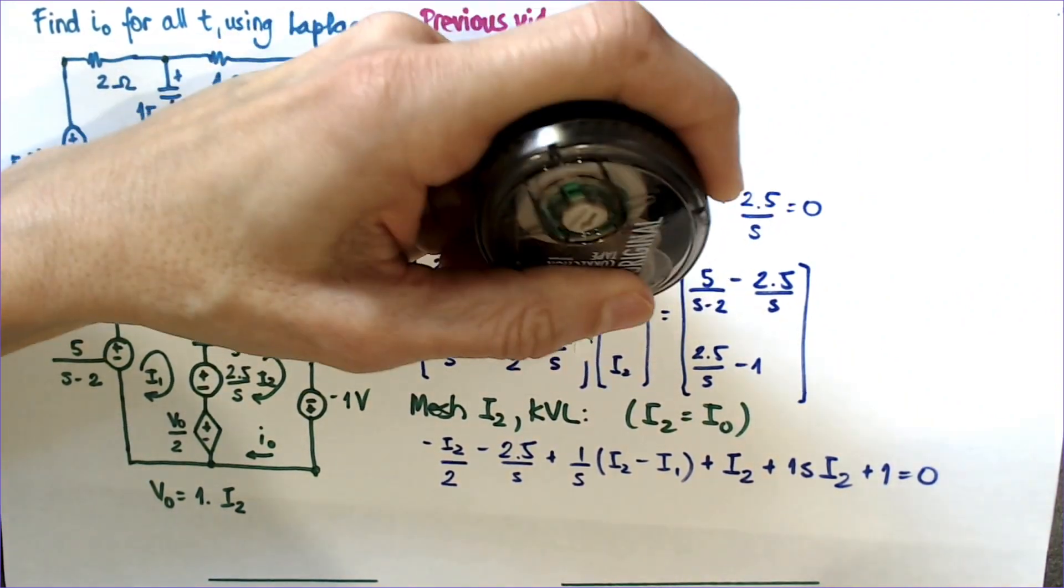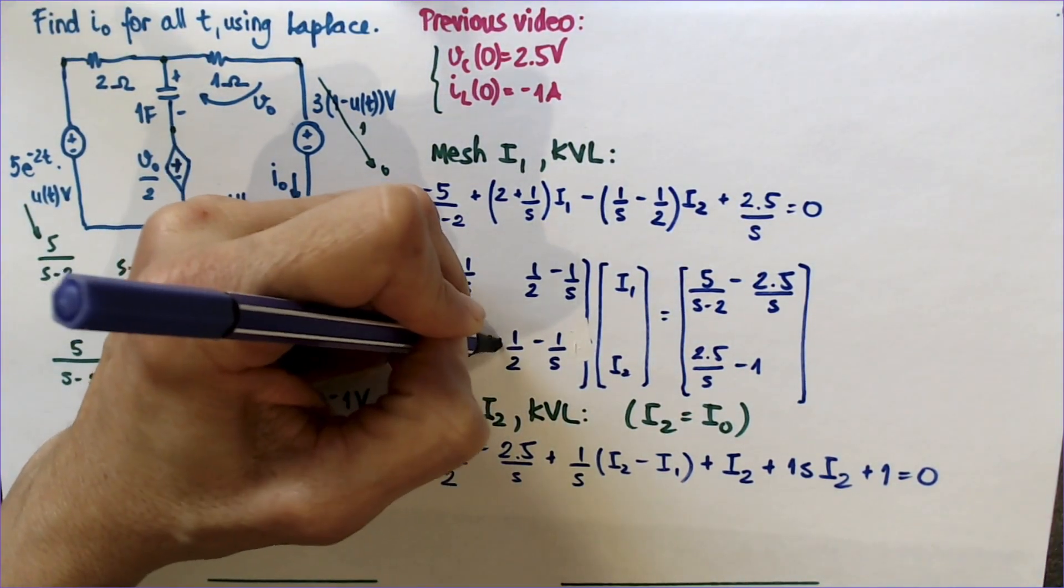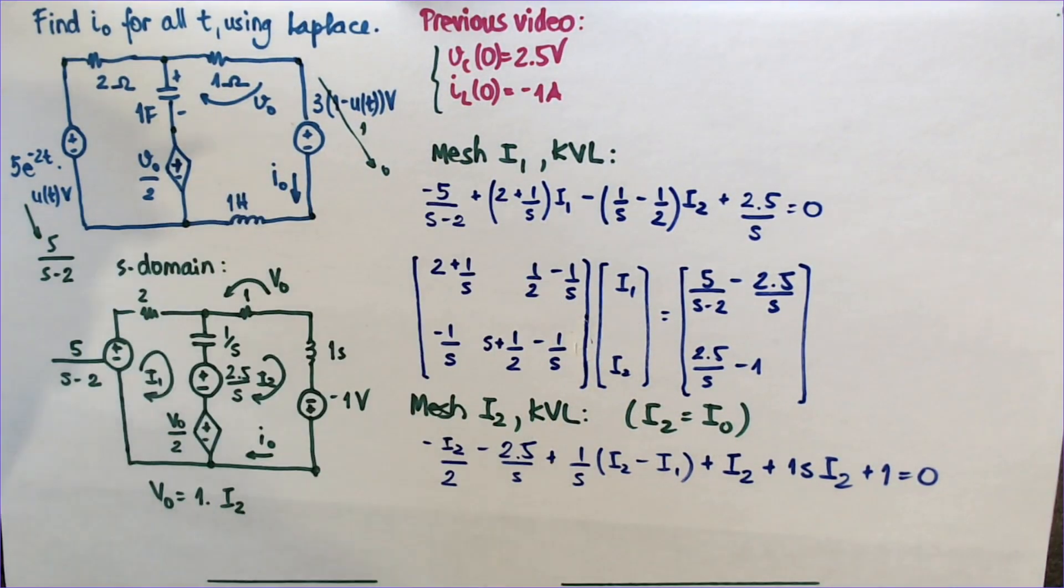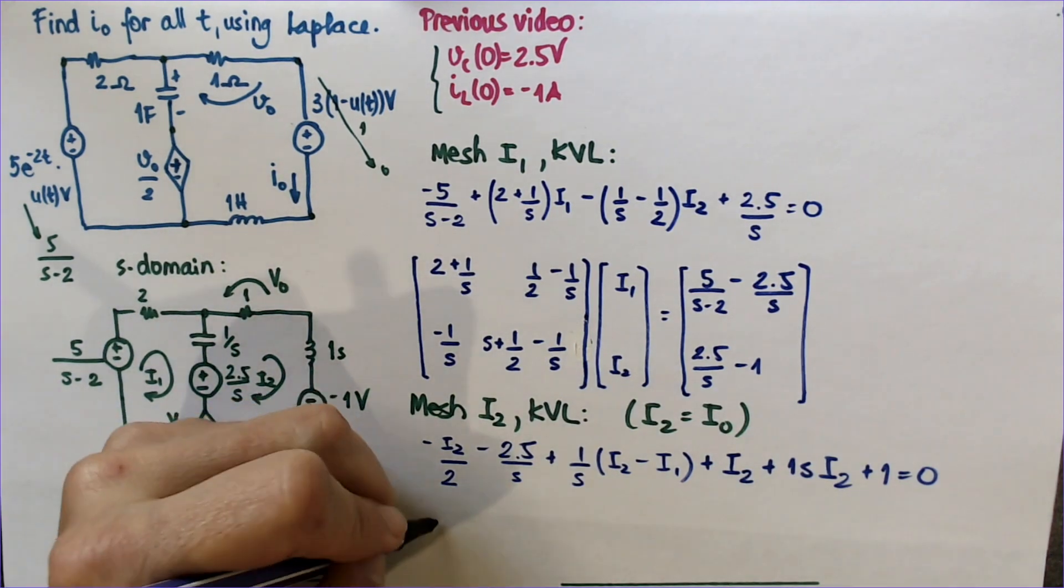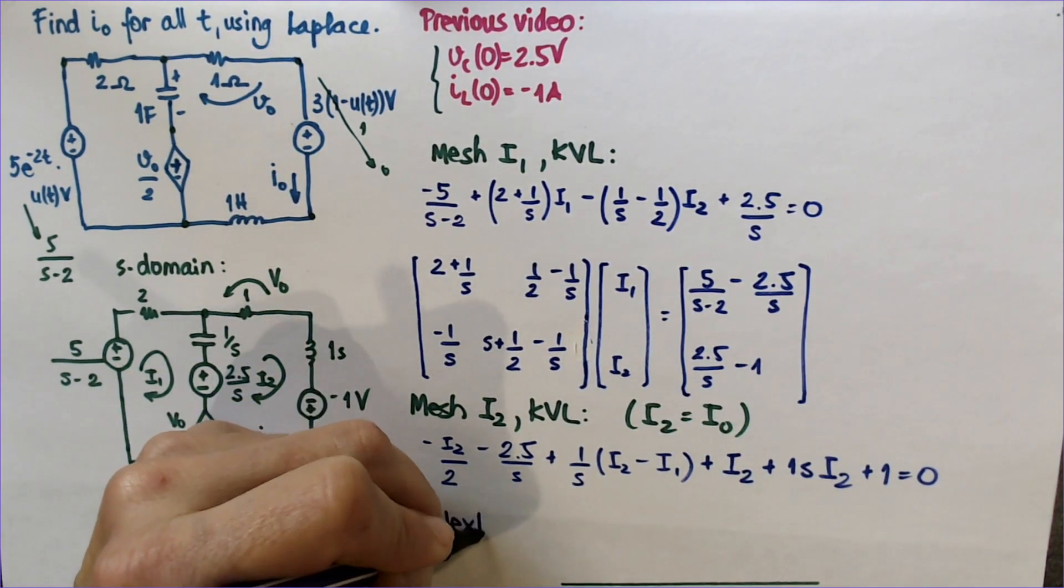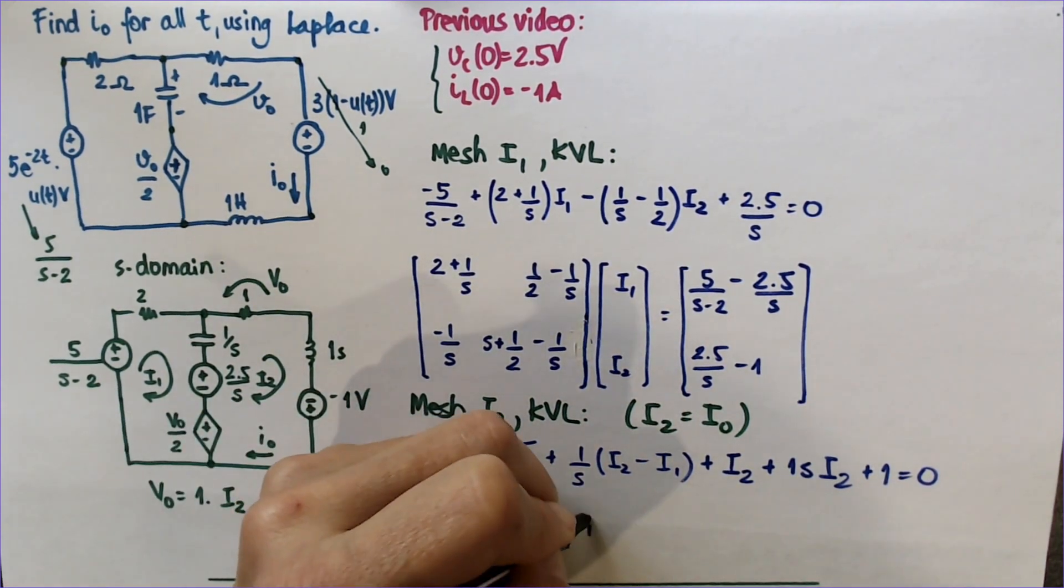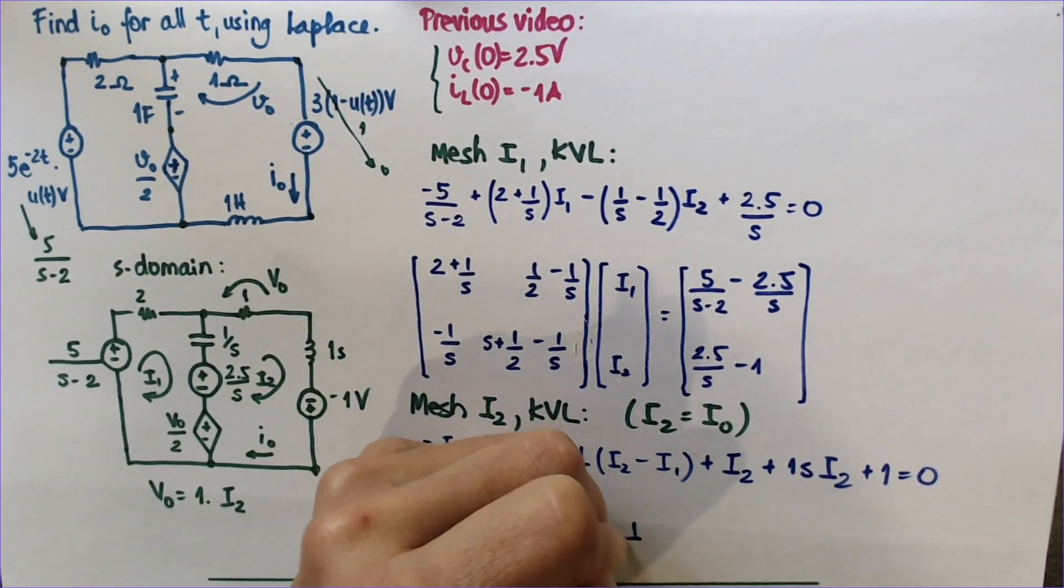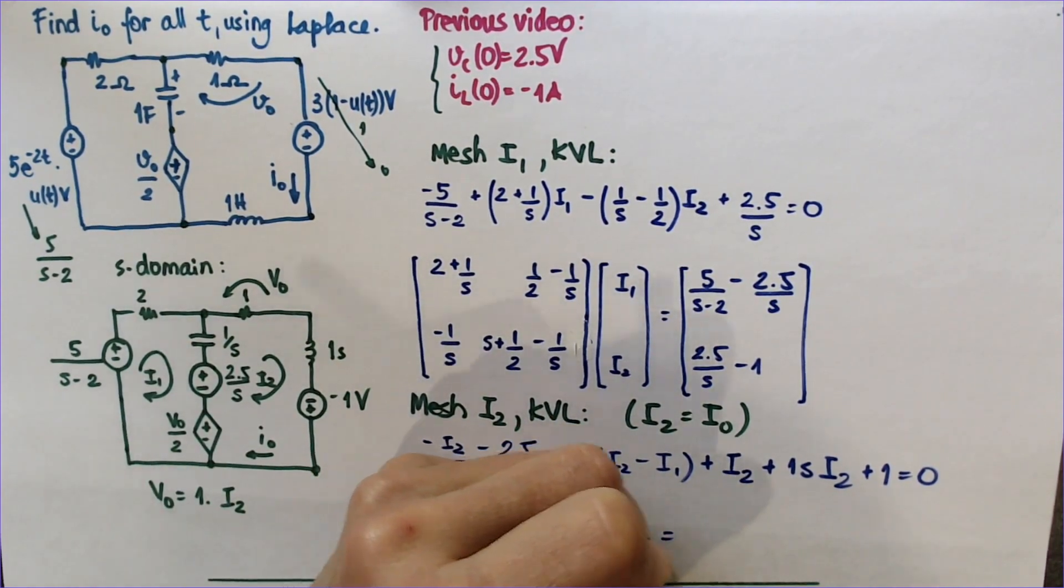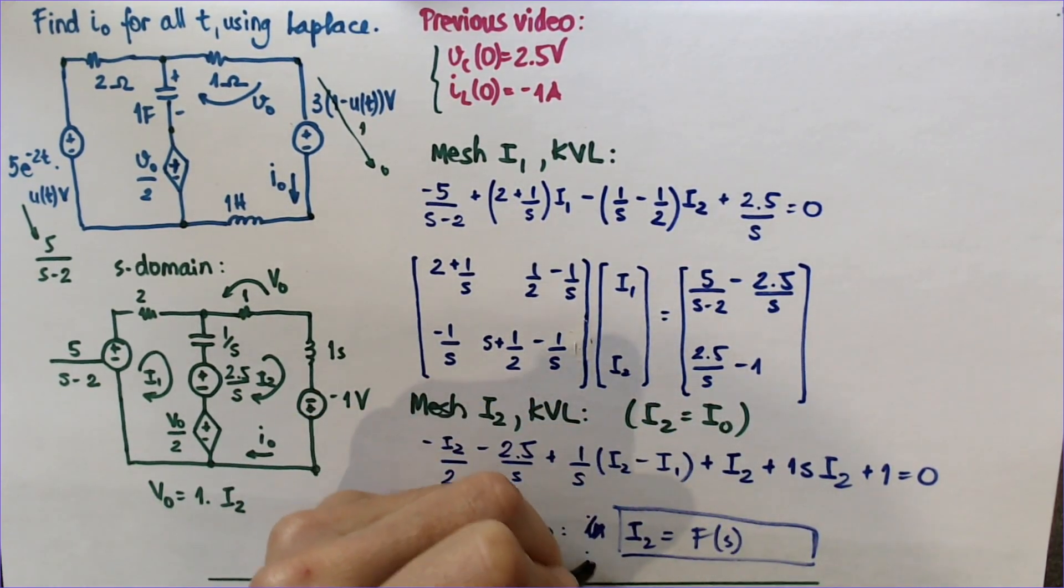So this would be what I'm asking you to end up with on the exam. Obviously the next step, and I don't expect you to, well, if you have a good calculator. It's not the inverse transform. Isolate, get I2 equals something, a function of s, and then inverse transform.